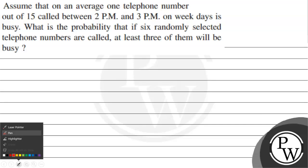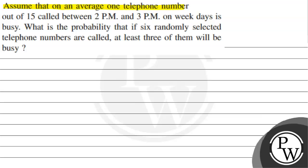Hello, let's read the question. The question says, assume that on an average one telephone number out of 15 called between 2 p.m. and 3 p.m. on weekdays is busy. What is the probability that if 6 randomly selected telephone numbers are called, at least 3 of them will be busy?